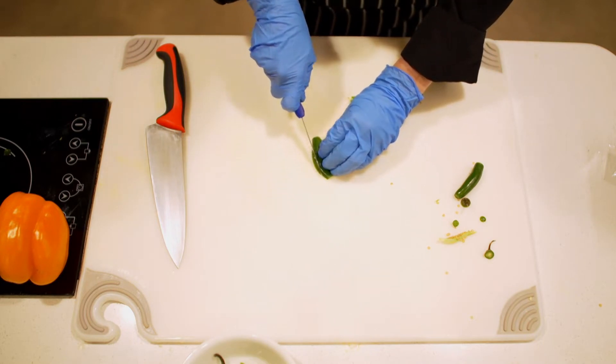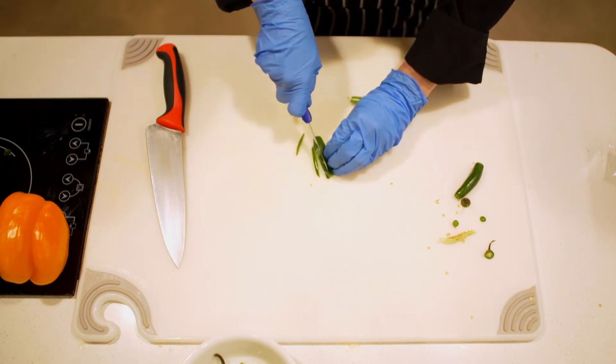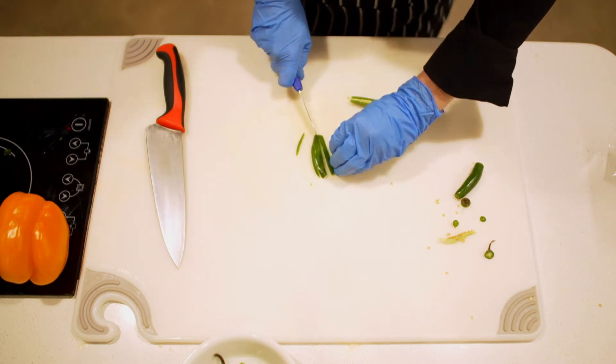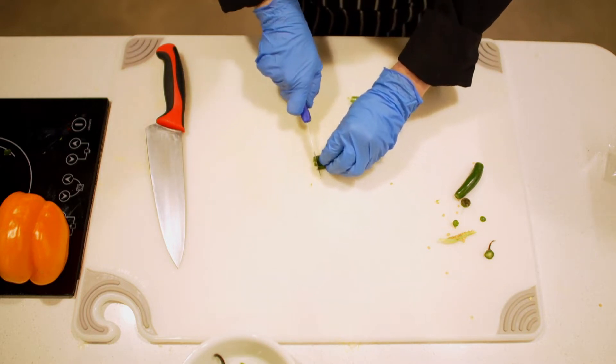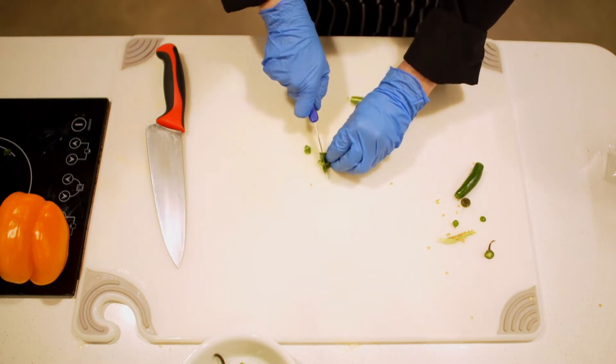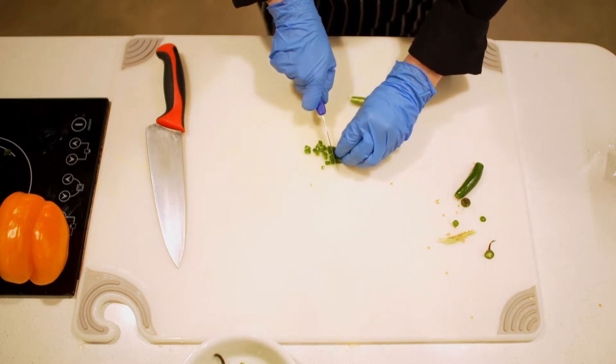After you get that rib removed, then you can just make some little slices. You can do this with your chef knife if you're comfortable doing that. This is just another option if you're not as comfortable—it's totally appropriate.